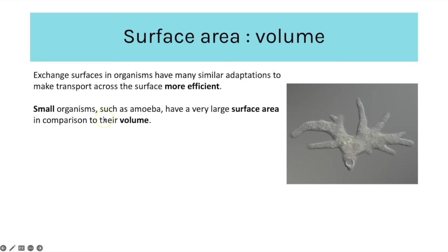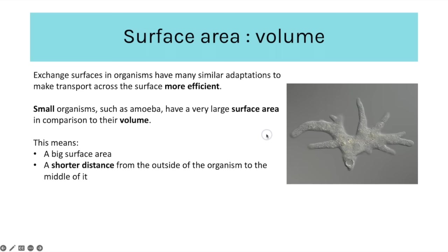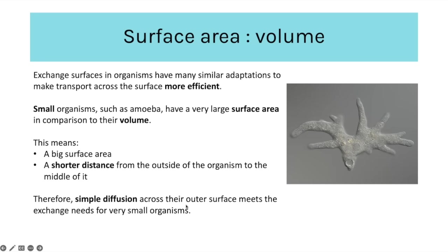Small organisms like amoeba have a very large surface area compared to their volume. That means they have a big surface area for transport of substances, but also there is a short distance between the outside and the very middle of the organism. For that reason they don't require any special adaptation organs or systems for transport — simple diffusion is sufficient to meet their metabolic needs.